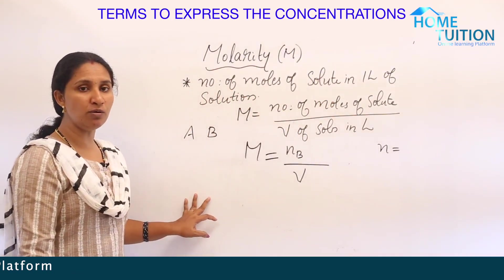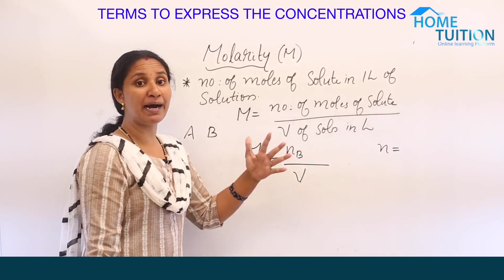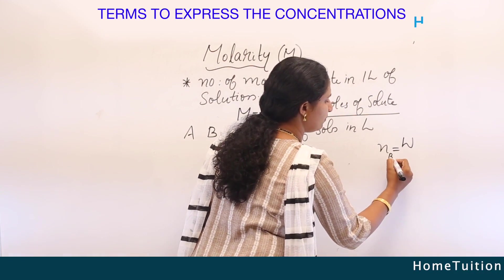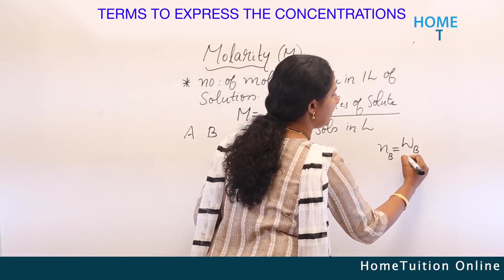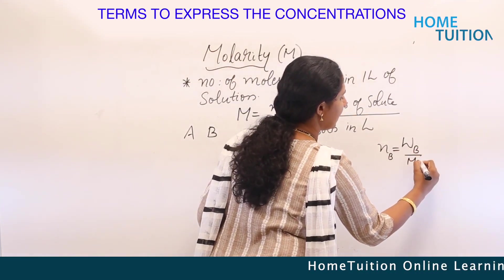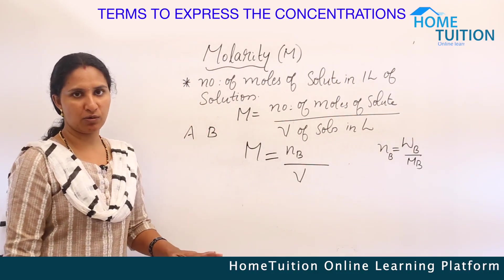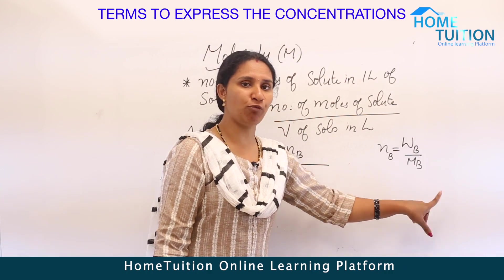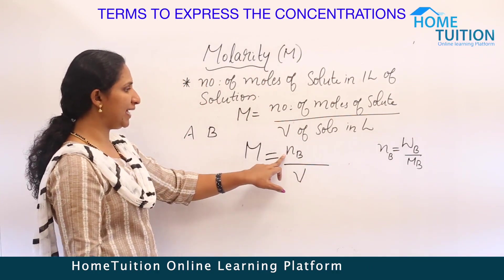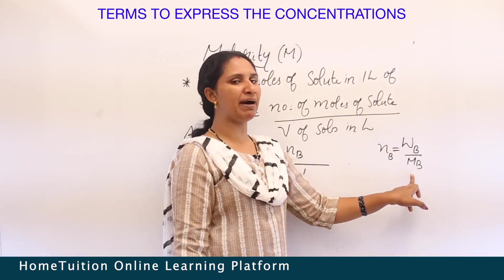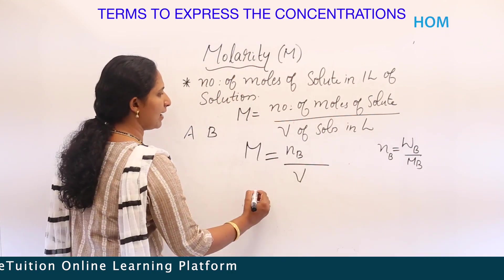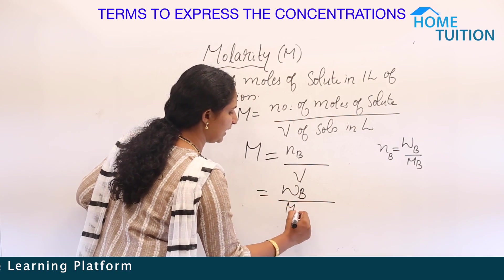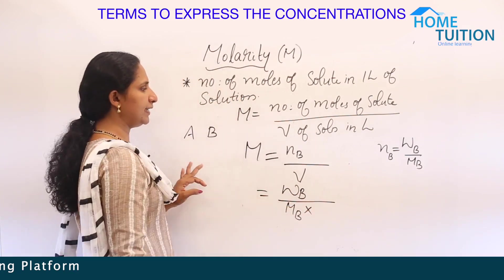Number of moles equals weight by molecular mass. In the case of solute, we write WB by MB, where WB is the weight or given mass, and MB is the molecular weight. So NB equals WB by MB, and molarity equals WB divided by MB into V in liters.